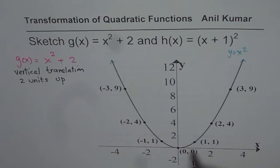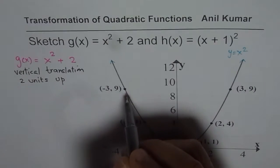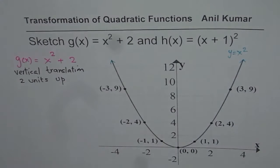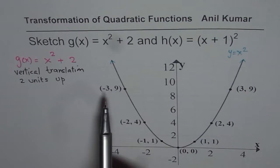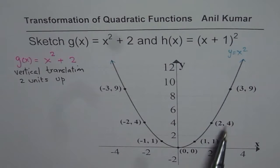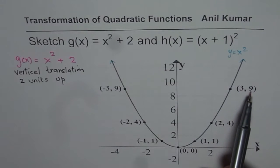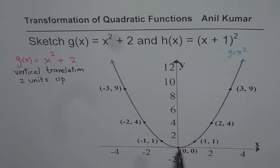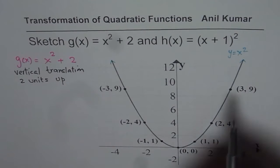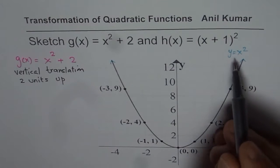We can start from the leftmost point, which is (-3, 9). We have taken seven key points for the parabola: (-3)² = 9, (-2)² = 4, (-1)² = 1, 0² = 0, 1² = 1, 2² = 4, 3² = 9. This gives you a parabola with vertex at (0, 0), and the step pattern is 1, 3, 5 and so on.